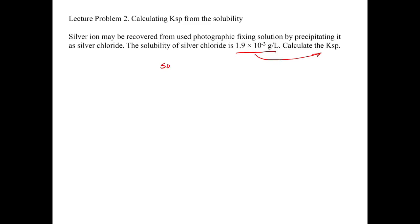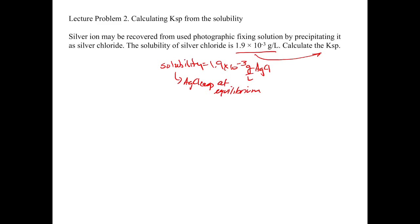The problem says the silver ion may be recovered from used photographic fixing solutions by precipitating it as silver chloride. The solubility of silver chloride is 1.9 times 10 to the minus 3 grams per liter. The solubility tells you how much silver chloride can dissolve at equilibrium — that's the amount of silver chloride aqueous at equilibrium. Whenever we do anything with equilibrium, we have to be in molar.